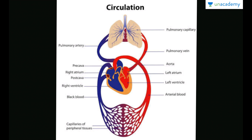All the blood shown in blue color is deoxygenated, while the blood shown in red color is oxygenated blood. You can see that there are two loops forming. The loop which distributes the blood into all the parts of the body is known as systemic circulation, while the loop of circulation which takes the deoxygenated blood into the lungs and brings back the oxygenated blood into the heart is known as pulmonary circulation.